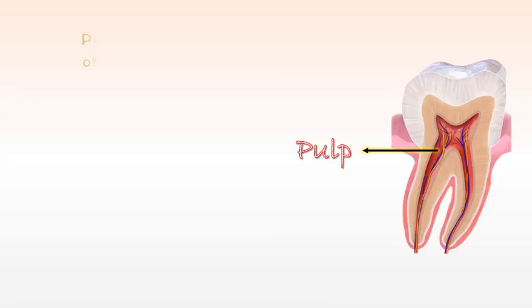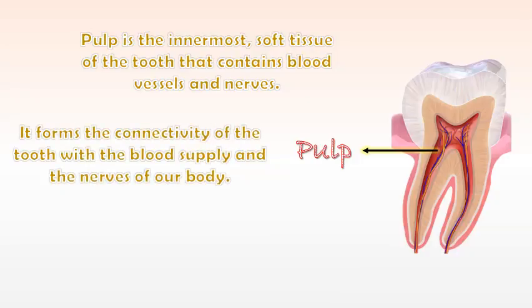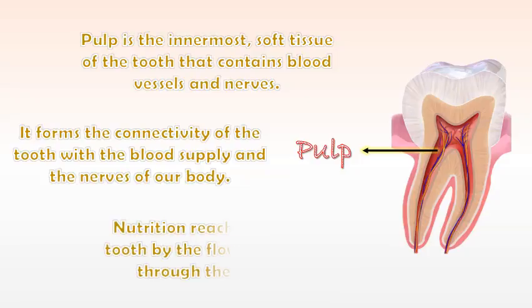Pulp is the innermost soft tissue of the tooth that contains blood vessels and nerves. It forms the connectivity of the tooth with the blood supply and the nerves of our body. Nutrition reaches our tooth by the flow of blood through the pulp.